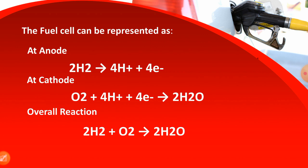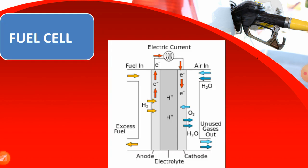The fuel cell reaction at the anode generates four electrons which move towards the cathode. The overall reaction is that hydrogen and oxygen combine to form water. As shown in this diagram, when hydrogen releases electrons, these electrons move through the circuit — this movement of electrons is electricity. Oxygen from outside, like from air, combines with hydrogen to form water.